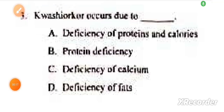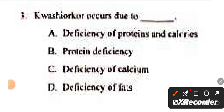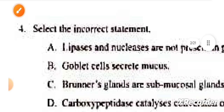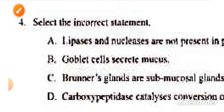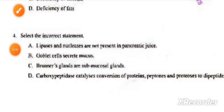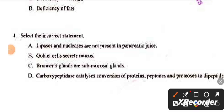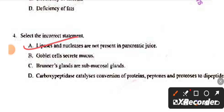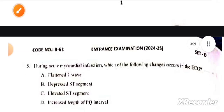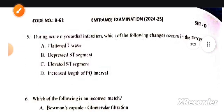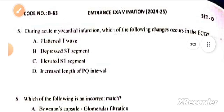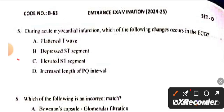Third question: It is caused due to the deficiency of? This answer is protein. Next: Select the incorrect statement. This answer is A. Next: During acute myocardial infarction, which of the following occurs in the ECG? This answer is C, elevated ST segment.